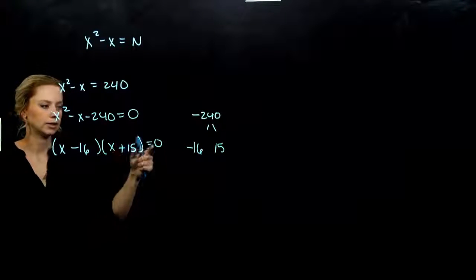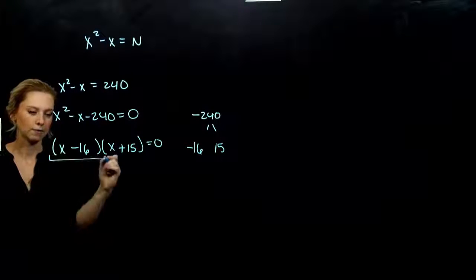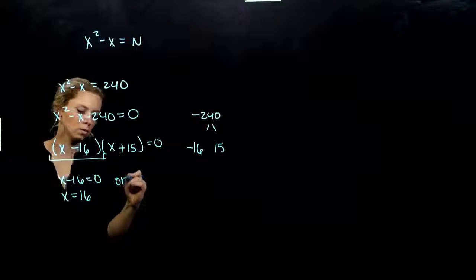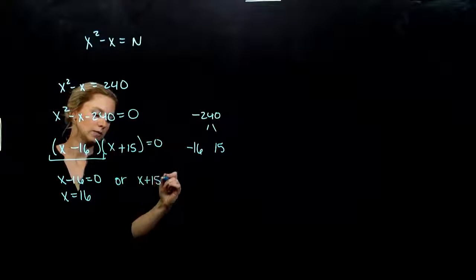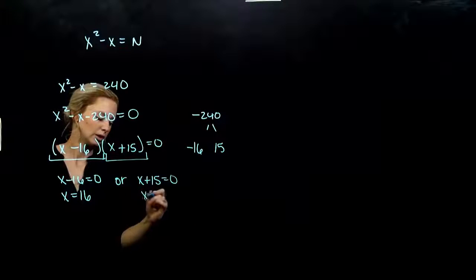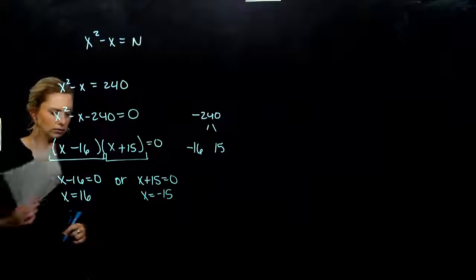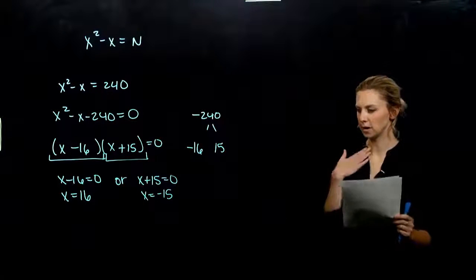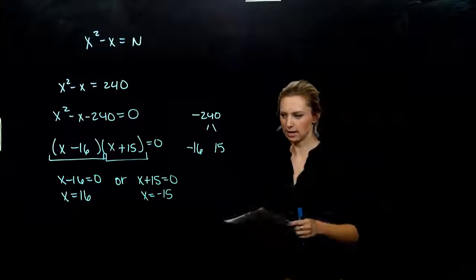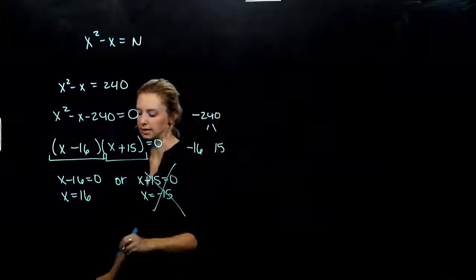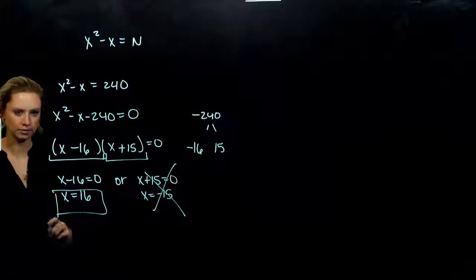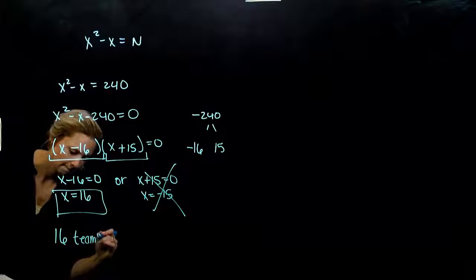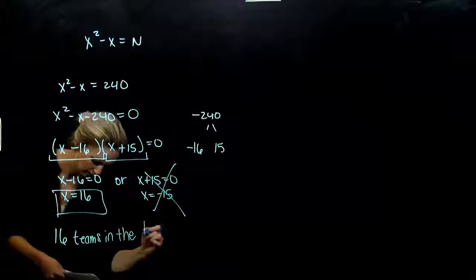We have a product equaling zero. Either (x − 16) = 0, giving x = 16, or (x + 15) = 0, giving x = −15. Thinking back to the problem, x represents number of teams. It wouldn't make sense to have a negative number of teams, so our correct answer is 16. There are 16 teams in the league.